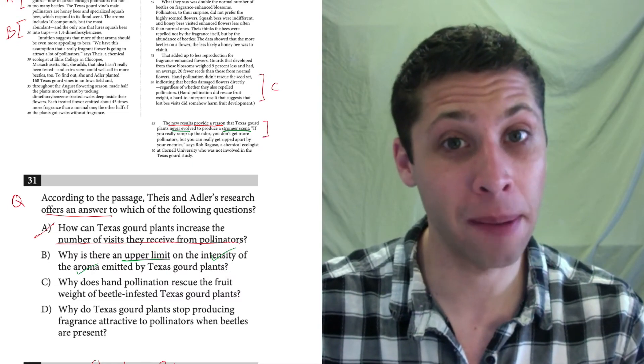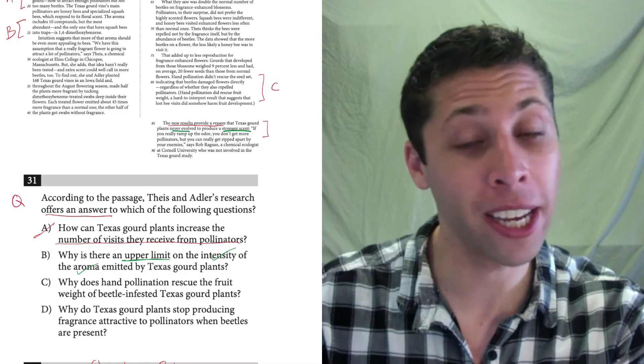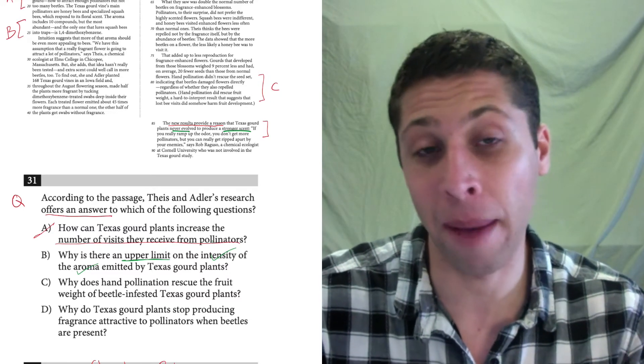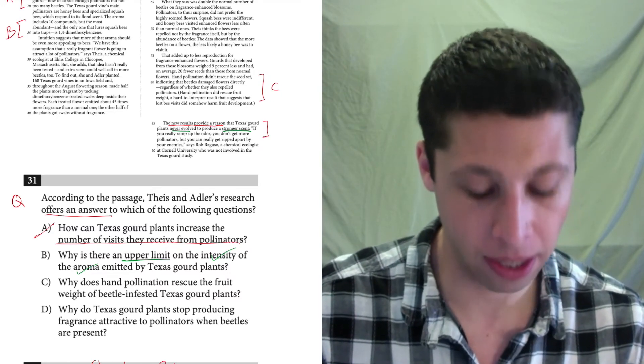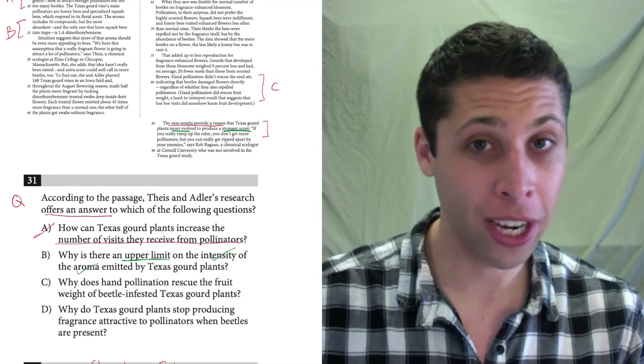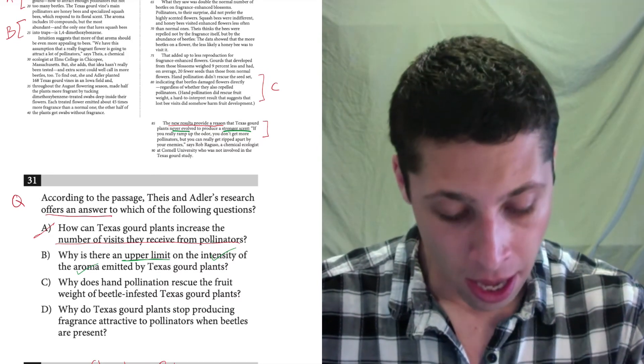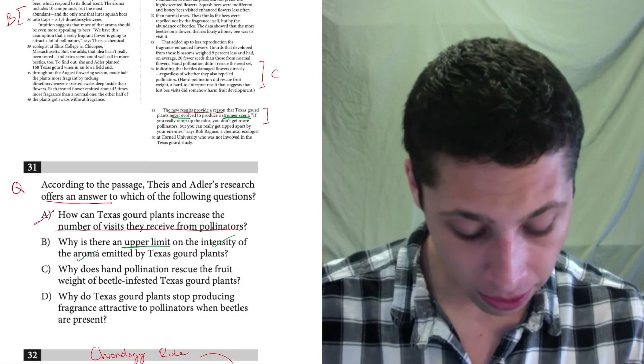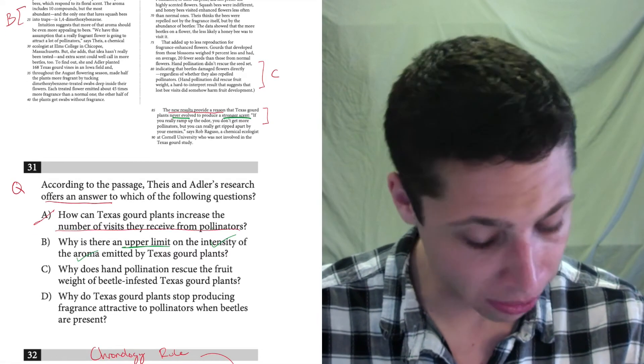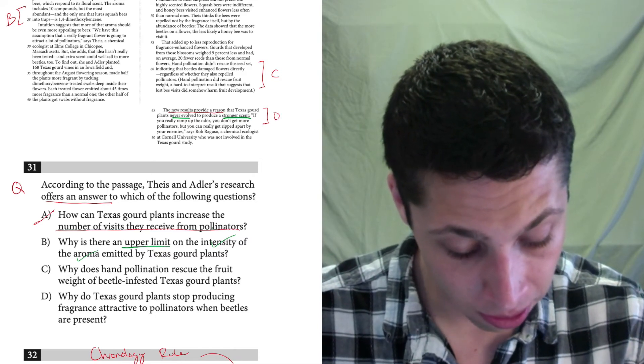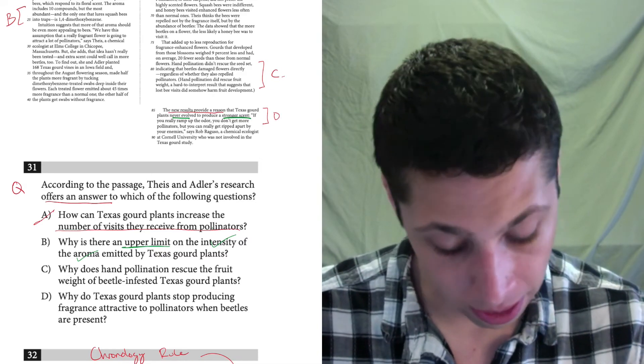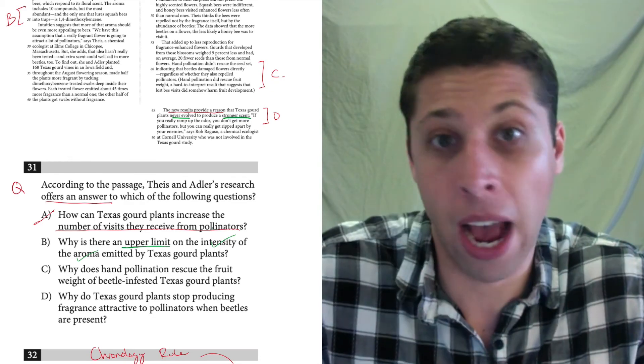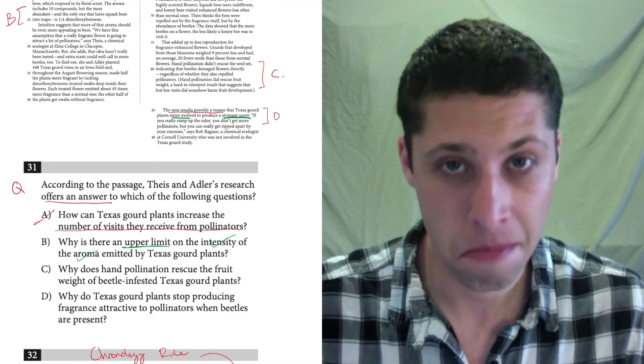We always have to look out for the times where there's like another word thrown in that's a little bit of a trap, a wrong word. And that might make the whole thing wrong. But we've kind of checked everything here and it all checks out. That's a really good sign. Let's move on to C and D though and just make sure. Why does hand pollination rescue the fruit weight of beetle infested gourd plants? Well, that has to do with this line C here that I didn't understand before. I know it's about fruits, but now I don't really care. I know it was a trap. It doesn't matter to me anymore.